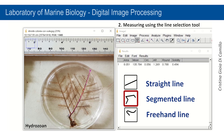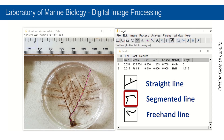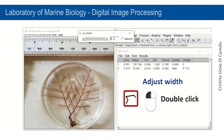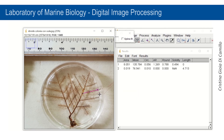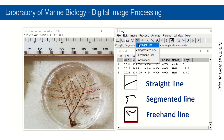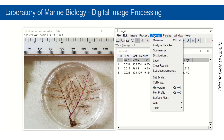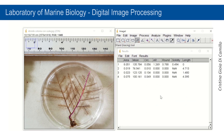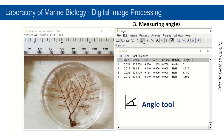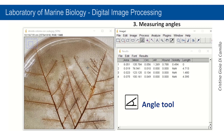A segmented line is useful to take measurements when objects are not perfectly straight. Choosing the freehand selection tool, you can draw a freehand line. To measure angles, select the Angle tool from the toolbar, then left-click and drag your mouse to draw the angle that you want to measure.